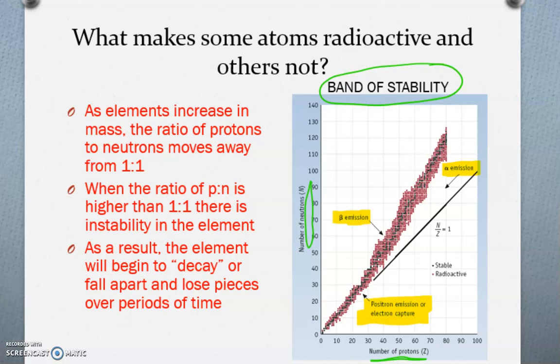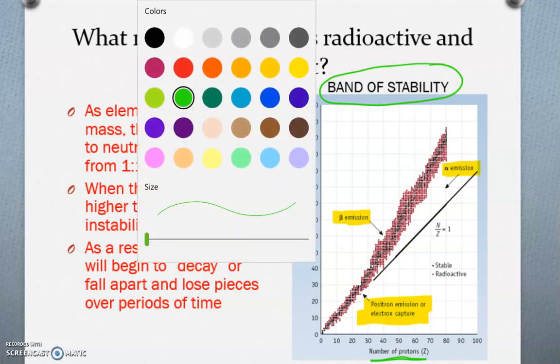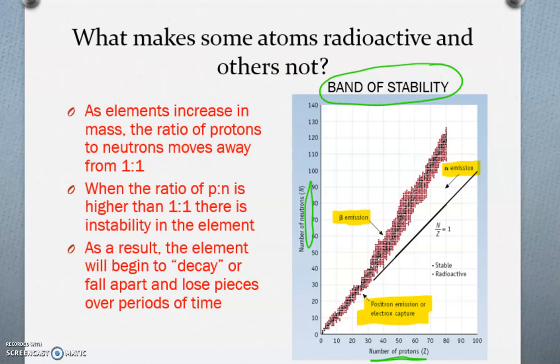Depending on where a certain element falls on our band of stability, we can tell what kind of decay it's going to go through. What you'll notice is that if an element falls directly in the middle where all of those black dots are, you're going to have an element that is stable, so it's not radioactive.